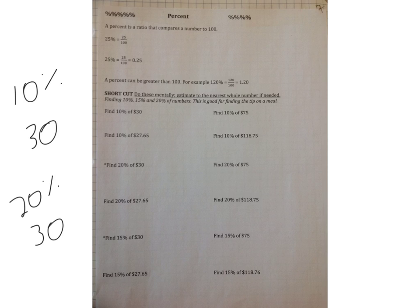So 10% of 30. If you remember when we did these before, we had 10% of 30, so we're going to have the decimal point moving over once. So 10% of 30 would be 3. 10% of 75, decimal's at the end, would be $7.50.